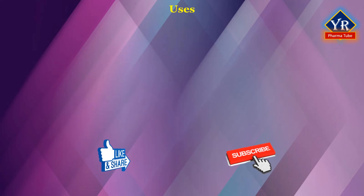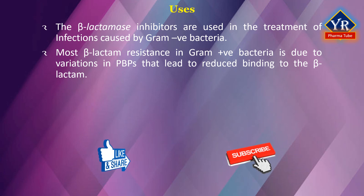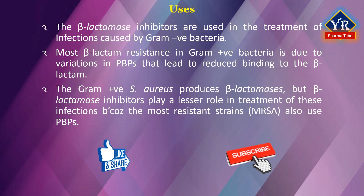Medicinal uses of beta-lactamase inhibitors: The most important use is in the treatment of infections caused by gram-negative bacteria, as beta-lactamase production is an important contributor to beta-lactam resistance in these pathogens. In contrast, most beta-lactam resistance in gram-positive bacteria is due to variations in penicillin-binding proteins that lead to reduced binding to beta-lactamase inhibitors. The gram-positive pathogen Staphylococcus aureus produces beta-lactamases, but beta-lactamase inhibitors play a lesser role in treating these infections because the most resistant strains — i.e., methicillin-resistant Staphylococcus aureus — also use variant penicillin-binding proteins.